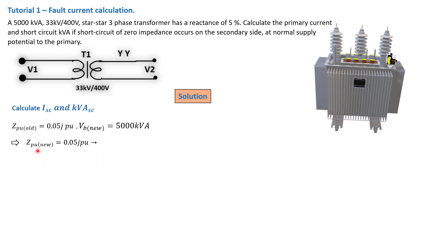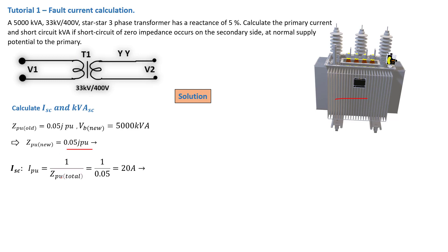Using that formula, we calculate Z_pu_new and get j0.05 per unit — essentially the same value, as shown by the formula. Now that we have Z_pu_new for this transformer, the next step is to calculate the per-unit current. Since this Z_pu_new is the total per-unit impedance of the transformer, the per-unit current is given by: I_pu = 1 / Z_pu.